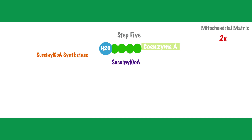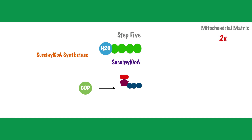In step five, the enzyme succinyl coenzyme A synthetase acts on succinyl coenzyme A. Coenzyme A is removed, releasing energy that facilitates the creation of additional energy. Specifically, an existing molecule of GDP (guanine diphosphate) joins with a phosphate molecule to create GTP (guanine triphosphate). Once GTP is formed, a molecule of ADP removes this phosphate from GTP to create ATP, and our GTP reverts back to GDP. The remaining molecule is called succinate, which continues through the remaining portions of the citric acid cycle.